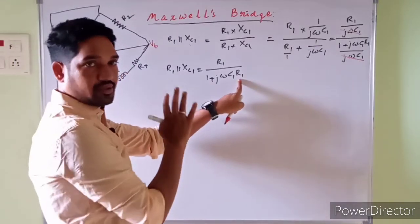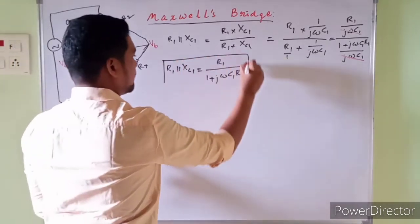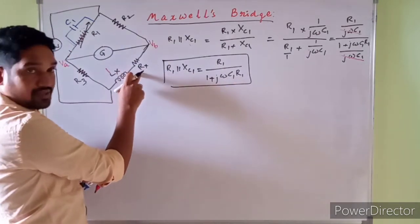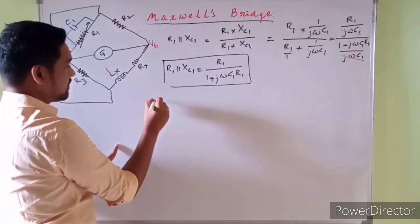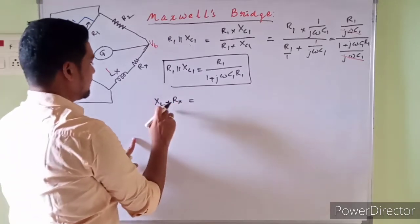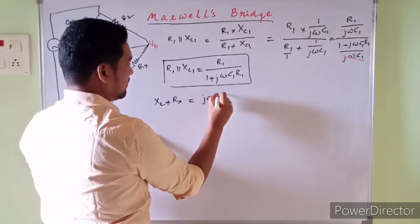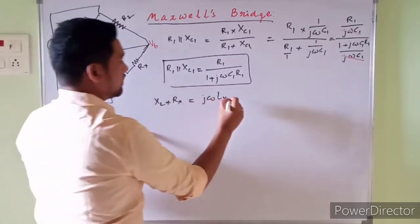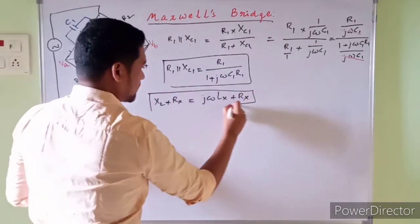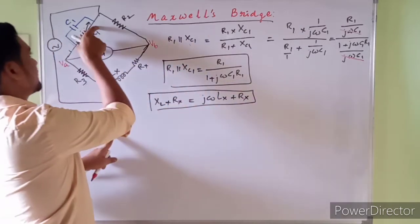That is the parallel combination of the R1–C1 arm. For the unknown arm, LX and RX are in series, so the impedance is XL + RX, which can be written as jωLX + RX. For R2 and R3 there is no additional simplification needed. So we now have the total impedance of each arm.